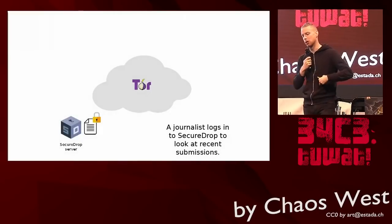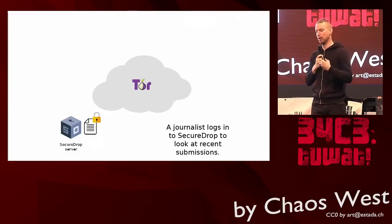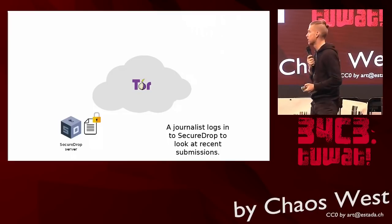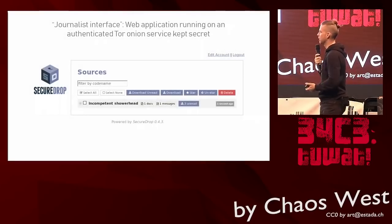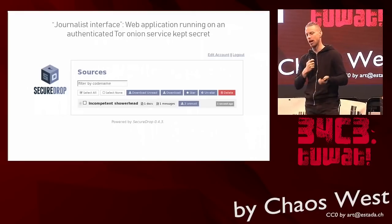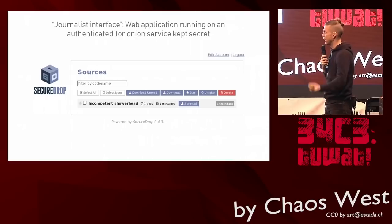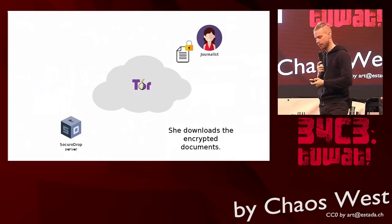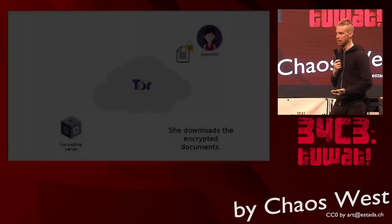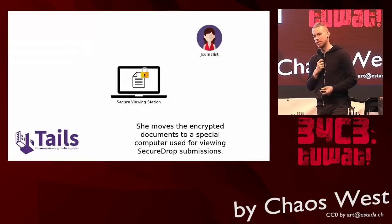The way journalists get this back is: using a Tails-based system, they log in to a journalist interface and see a list of sources. Sources are assigned a random adjective-noun username so journalists can keep track of who they are. For sharing documents, they will download them to an external USB, transfer the USB to an air-gapped laptop that contains the private keys, and the private keys can then decrypt the files.